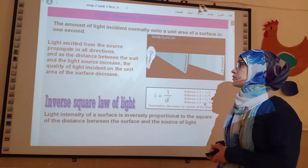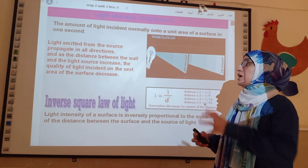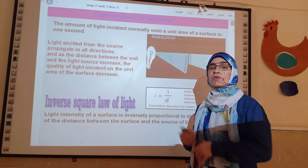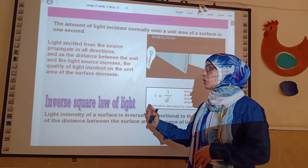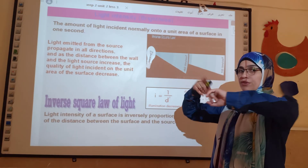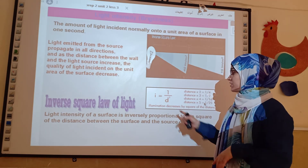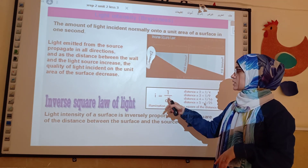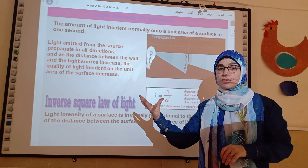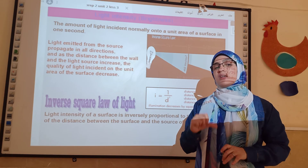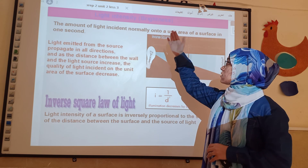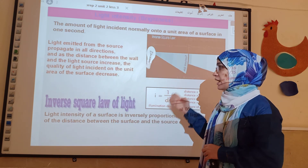Light intensity. Can we control the light intensity? Yes. As we said before with sound and the inverse square law of sound, here we also have the inverse square law of light: light intensity on a surface is inversely proportional to the square of the distance. So, light intensity increases when the distance decreases, and light intensity decreases when the distance increases.